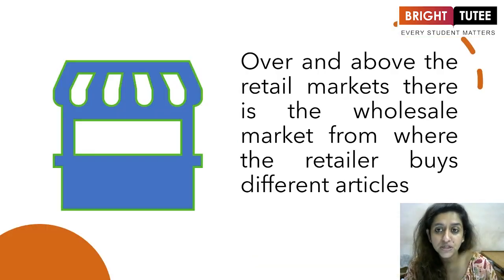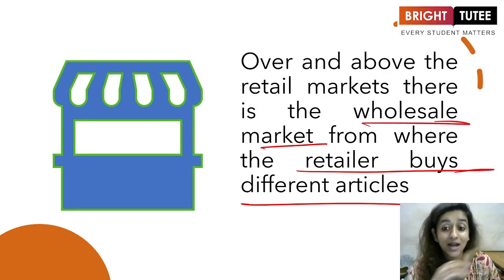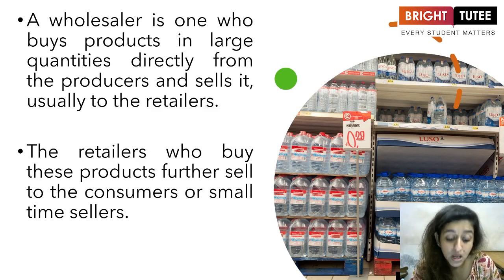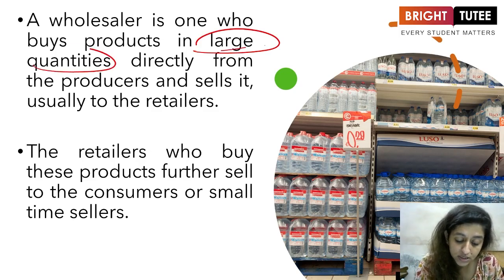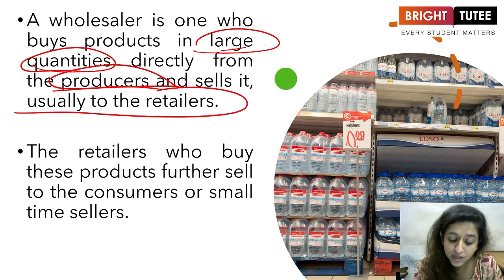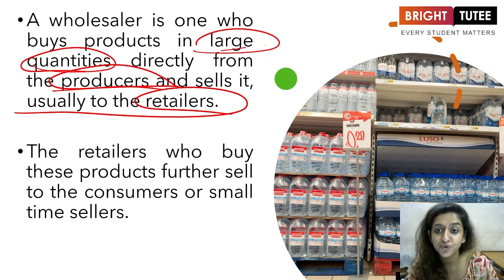Over and above the retail markets, there is a wholesale market from where the retailers buy different articles. There has to be a wholesale market from where the retailers are buying their articles. A wholesaler is one who buys products in large quantities directly from the producer and sells it usually to the retailer.